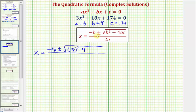minus four times a, where a is 3, times c, where c is 174. All of this is divided by two times a, in this case two times 3.